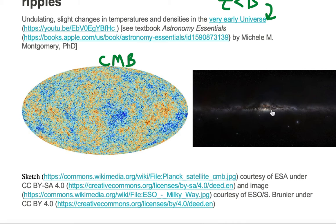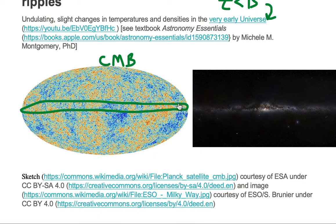If we transfer the right image into the left image, then the Milky Way galaxy is running left to right in the image of the cosmic microwave background. Above the Milky Way galaxy is the northern hemisphere sky, and below the Milky Way galaxy is the southern hemisphere sky of the cosmic microwave background radiation.